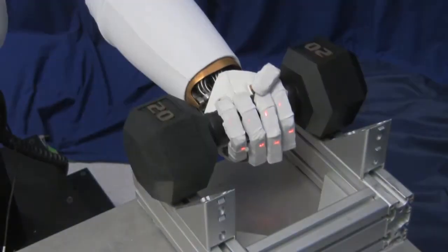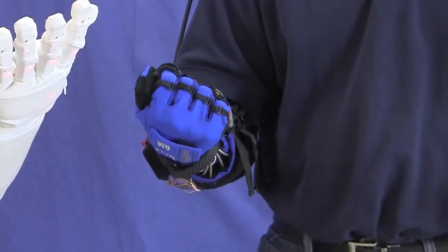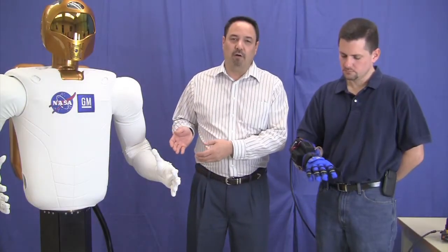What we'd like to show you today is something we call the human grasp assist or robo-glove. This was really inspired by the work that was done on the hands of R2.